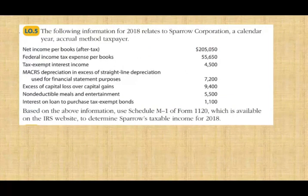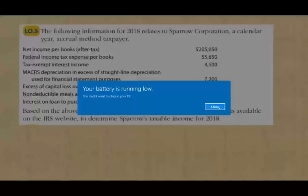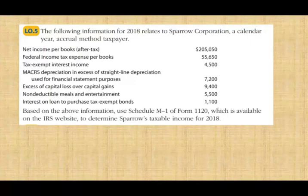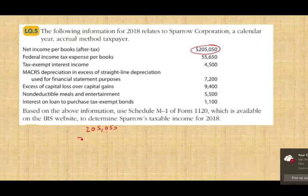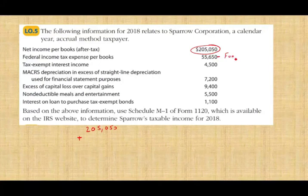Let's take a look at this example — they want us to complete a Schedule M1. Let's first work through it with common sense, then look at the actual Schedule M1. We are given net income per books of $205,500. That's our starting point. Federal income tax expense per books: we always add this back because it was deducted for GAAP but for IRS you cannot deduct it. Therefore, add back $55,650.